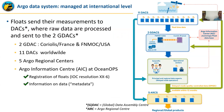The Argo data system is managed at international level. Floats send measurements to the DAC where raw data are processed, and then the DAC sends to two GDACs — one located at Coriolis in France and one at the Fleet Numerical Center in the US. Having two GDACs ensures that all data are always available to everybody. Another important element is the Argo information center managed by OceanOps, which allows registration of the float prior to deployment to comply with IOC resolution 26, and manages metadata information, the profiles themselves, and ensures monitoring of the fleet at sea.